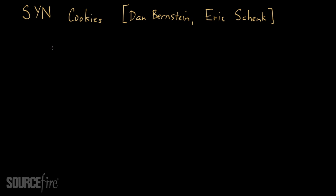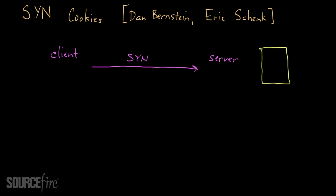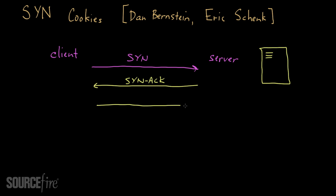SYN cookies are a particularly clever way of defending against SYN flood attacks. The issue with the TCP three-way handshake is that when a client sends a SYN message to a server, the server has to allocate space in a table for information about that particular request. The server sends back a SYN ACK, and then waits for an ACK packet — that's how the typical handshake occurs.